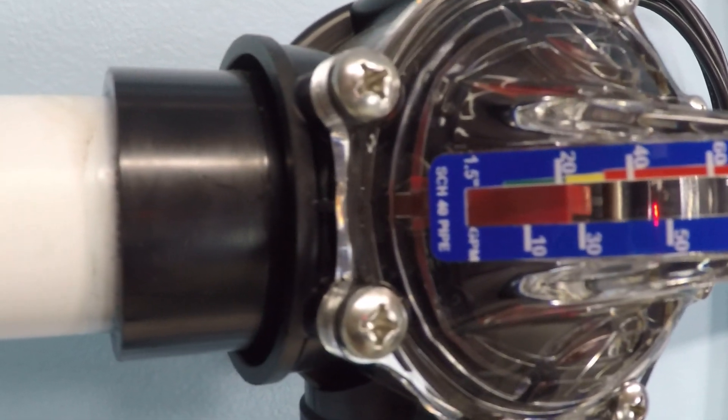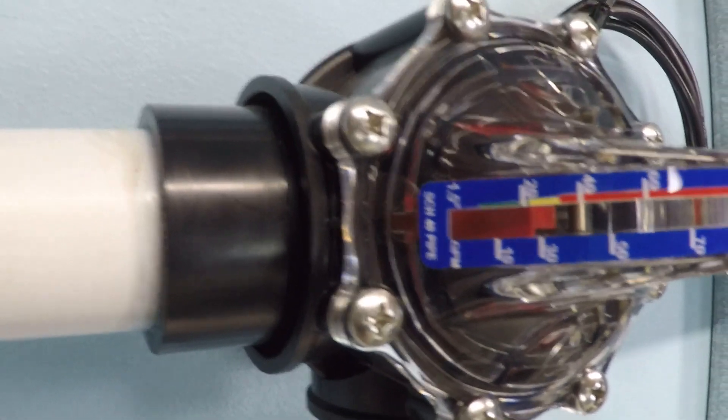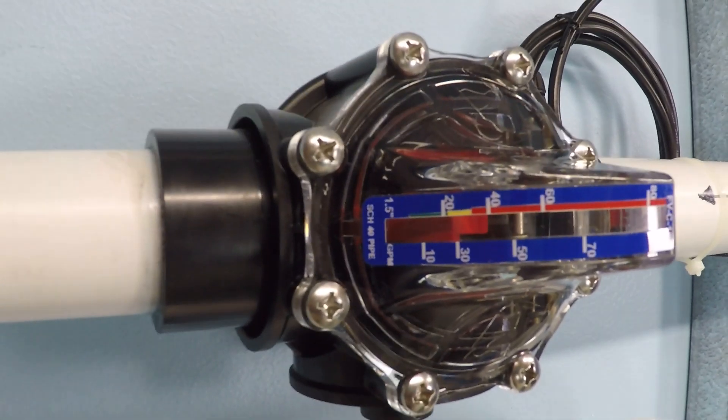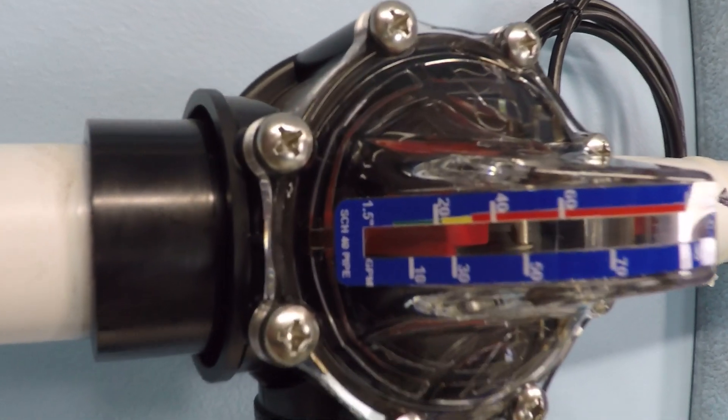What I want to do is move until the two line up there. See how they just lined up? That's what I'm looking for. That's the point I'm going to read to determine flow.